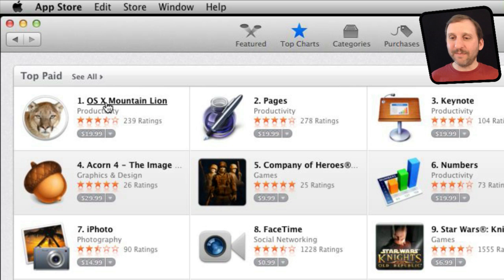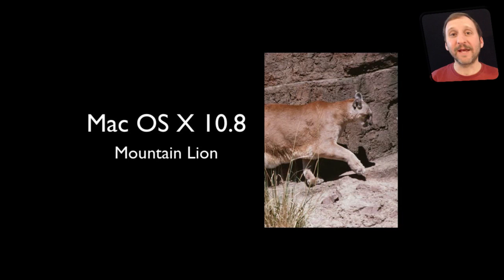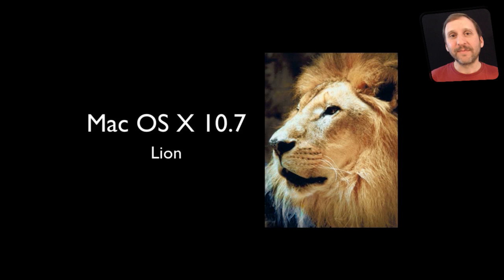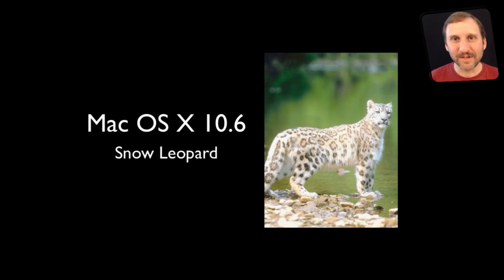So it is important to know that they are one and the same thing. Let's look at the history of the cat names. Of course we are at Mac OS 10.8, Mountain Lion. Before that we had Lion, and before that was Snow Leopard. Now it is important not to read too much into the names because each version of Mac OS 10 is very different than the previous one — it is a full version difference.